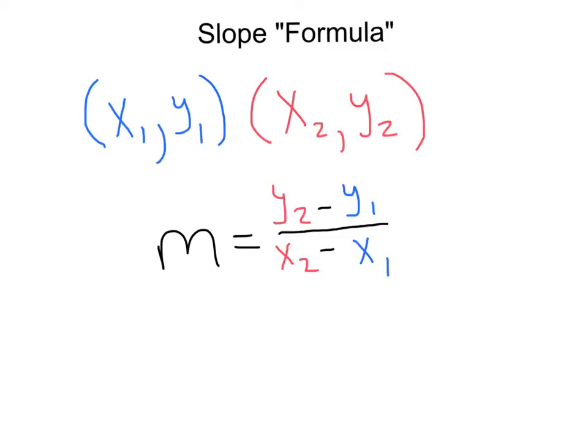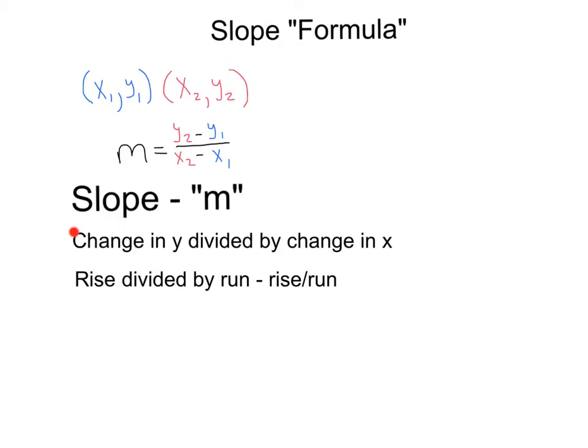And this basically means that the slope, or m, is the change in y divided by the change in x, or rise divided by run. Rise over run. What? That's exactly the same thing we talked about last lesson. Exactly.